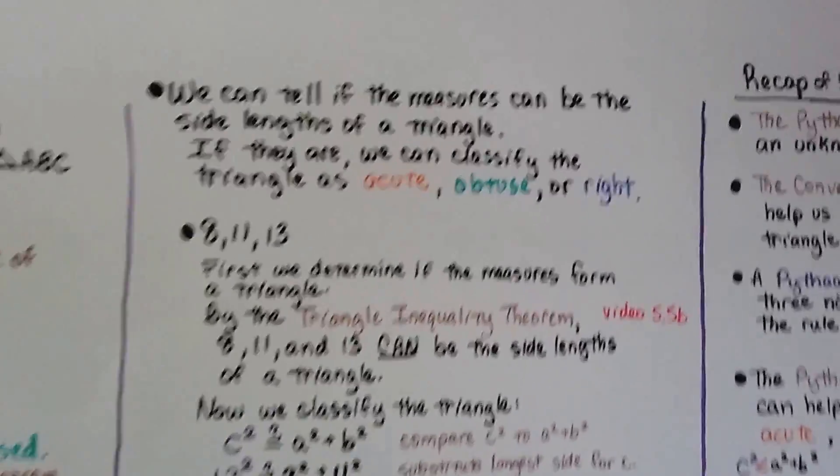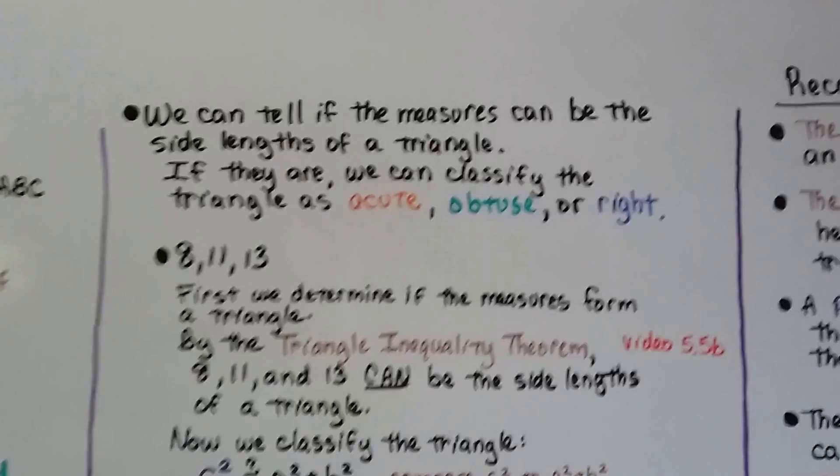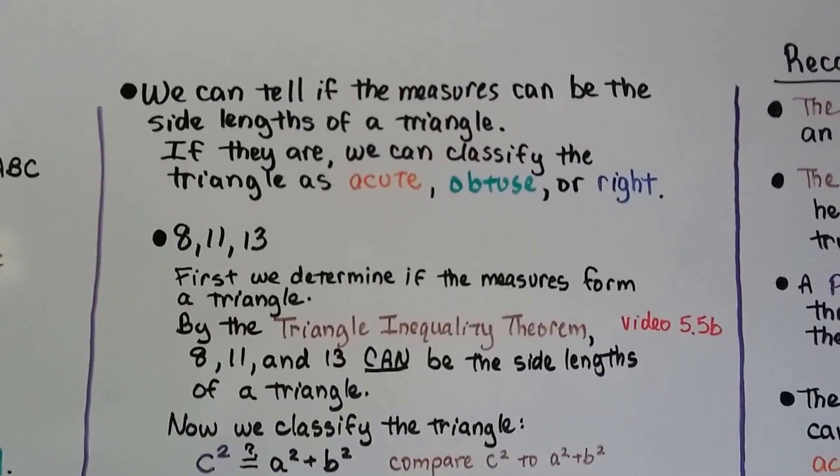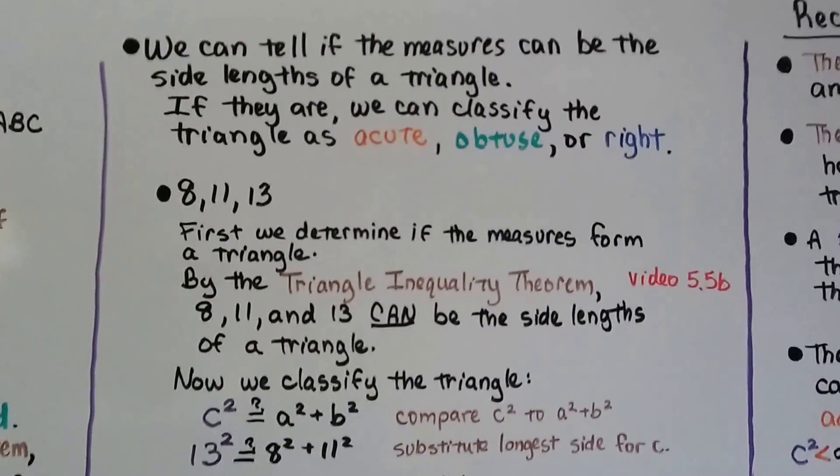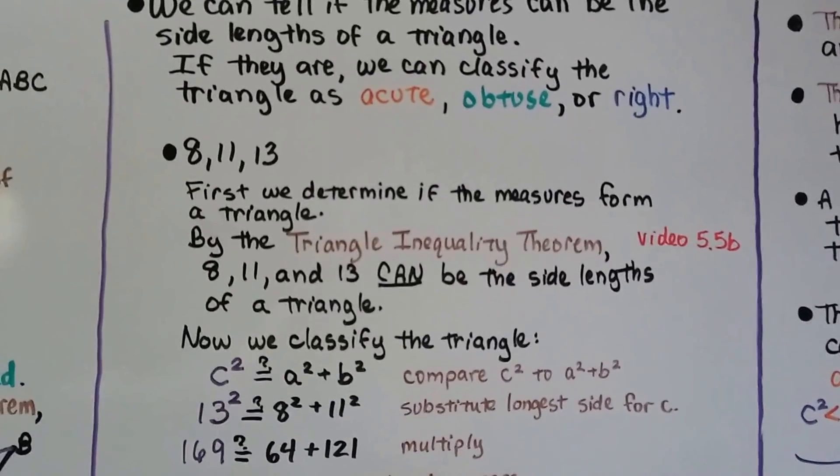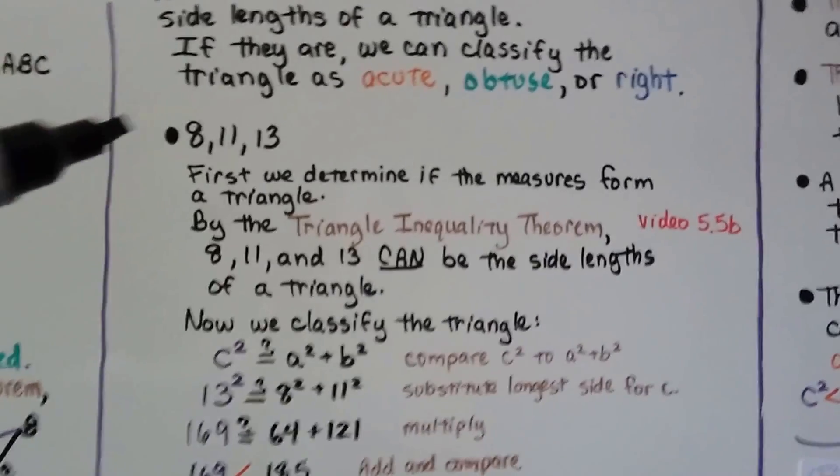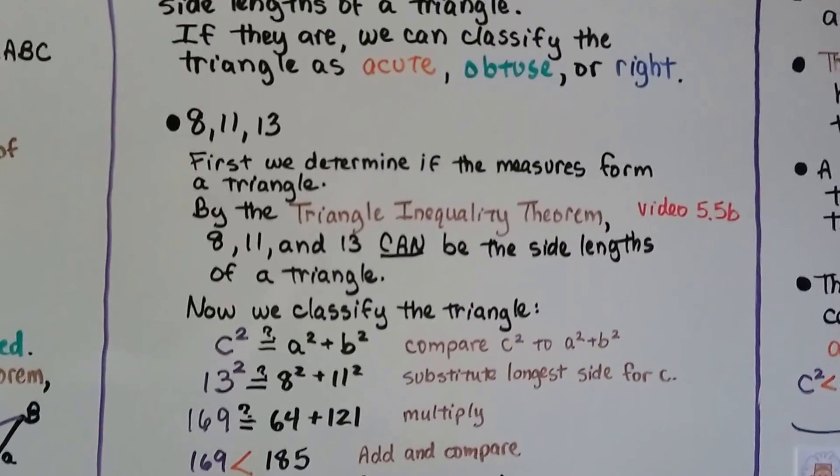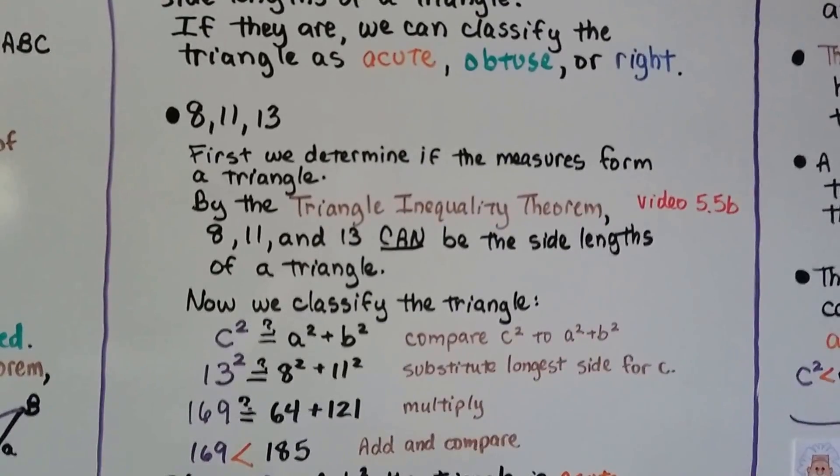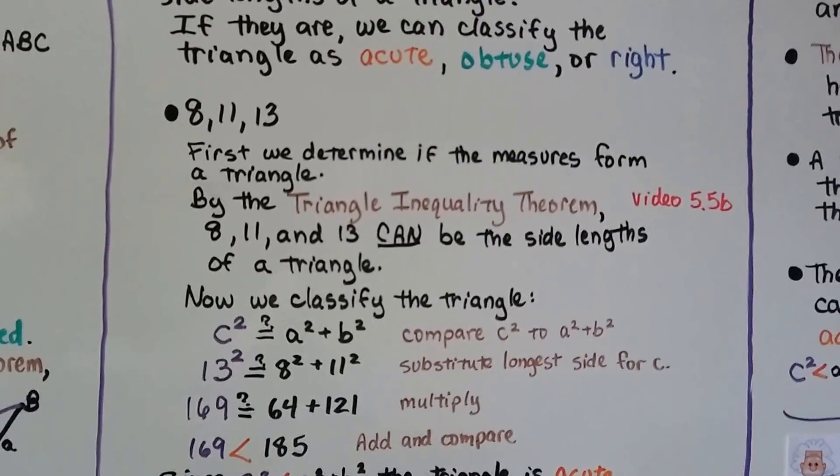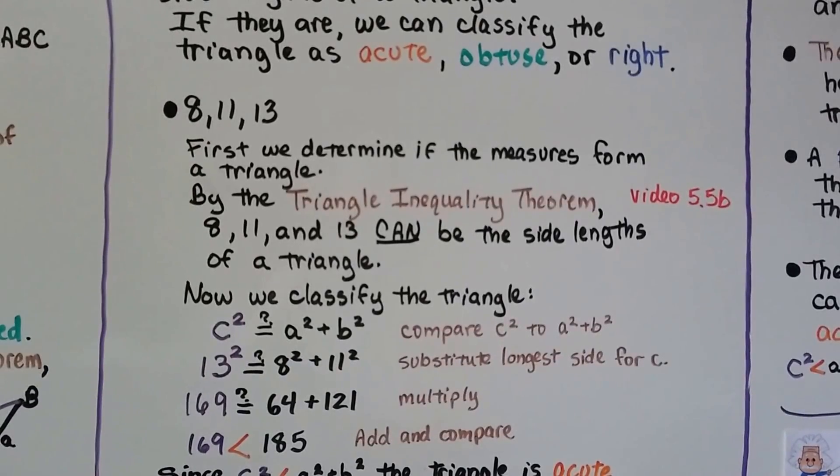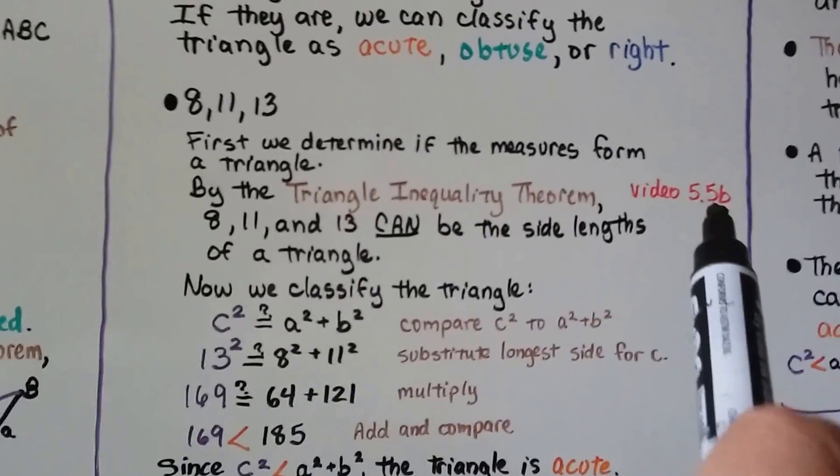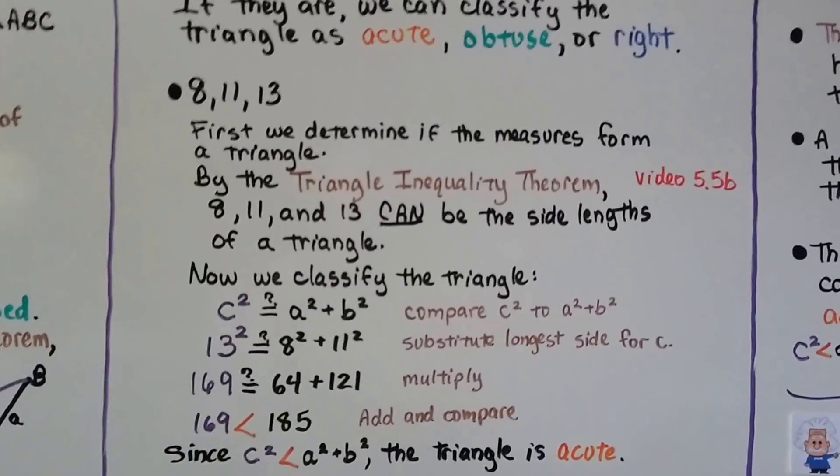We can tell if measures can be the side lengths of a triangle, and if they are, classify the triangle as acute, obtuse, or right. So we have 8, 11, and 13. First, we determine if the measures form a triangle. By the triangle inequality theorem, 8, 11, and 13 can be the side lengths of a triangle. Now we classify the triangle.